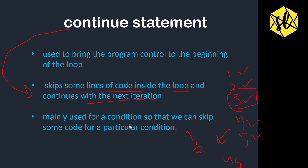So the output will be 1, 2, 4, and 5 — 3 will not be printed. Basically, the continue statement is mainly used for a condition so that we can skip some code. In this example, we skipped the print statement for a particular condition. Our condition here was when i equals 3, which is why the value 3 is not printed.